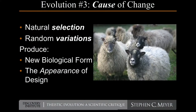That leads really to the most important issue, which is the cause of the change. We've defined evolution as change over time — continuous change over time — but now we want to really think about what might be causing that change, because that's the essential part of both classical Darwinian theory and the modern neo-Darwinian synthesis that we all learn in our textbooks.